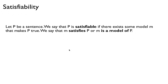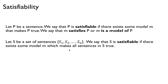If p is a sentence, then we say that p is satisfiable if we can find a model m that makes p true — you can find an assignment or a model that makes the sentence true, and then that assignment is a model of p. If you have a bunch of sentences s1 to sn, then we say that the set S is satisfiable if we can find a model that satisfies all sentences in S, making all of them true.